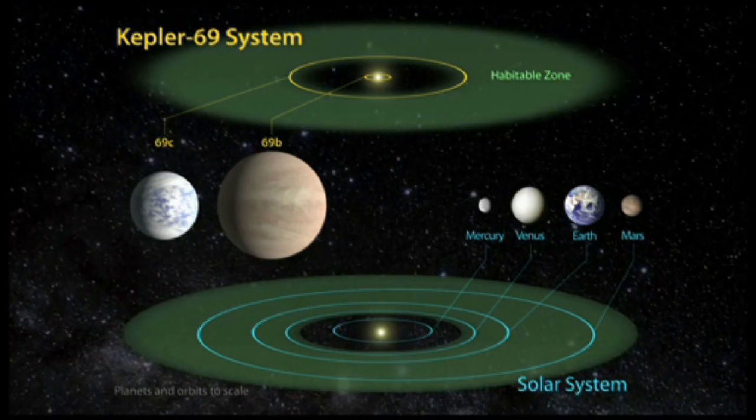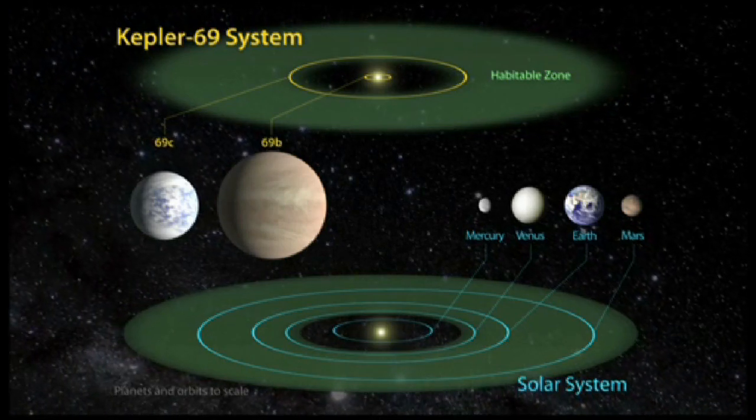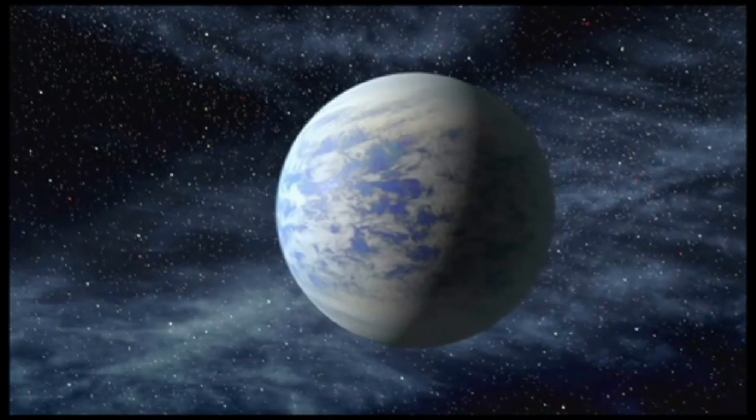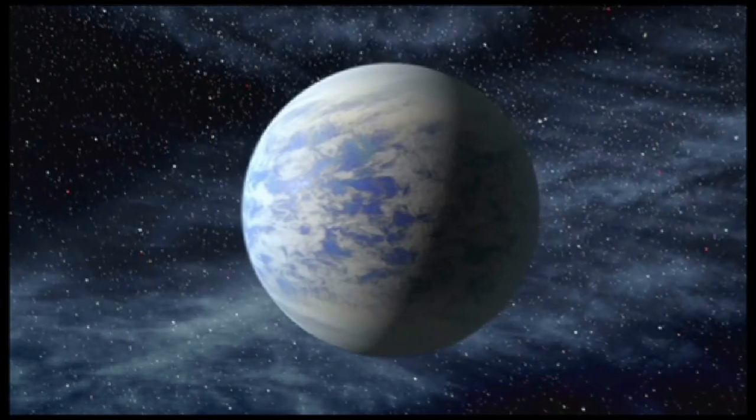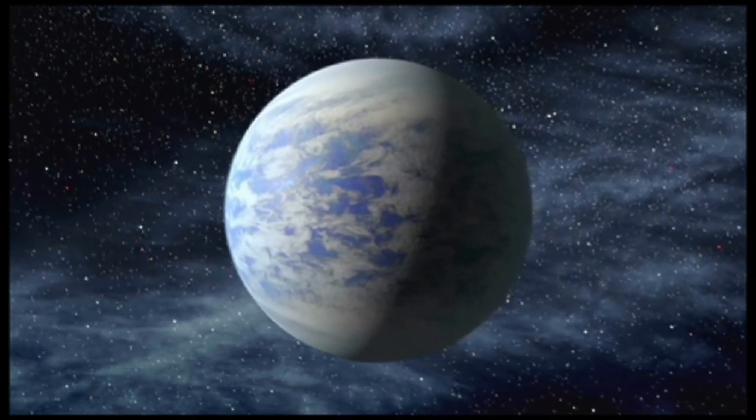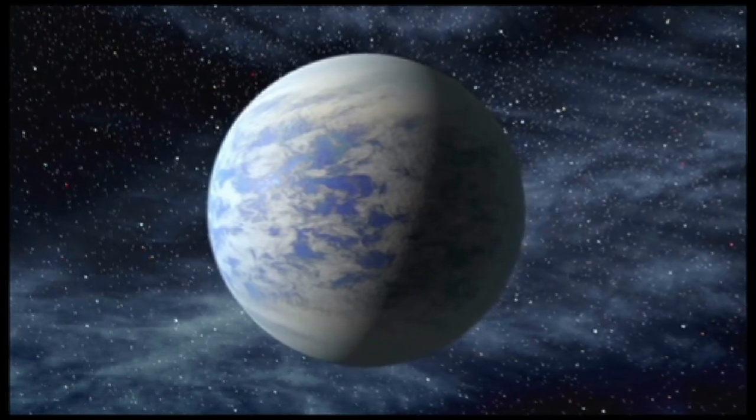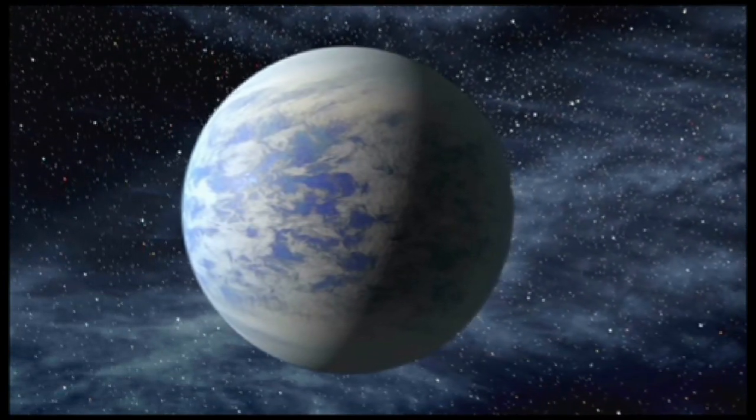It is much hotter and closer to its star than the planet Mercury is to the Sun. The outer planet, Kepler 69c, is about 70% larger than Earth and orbits every 242 days. It is the smallest planet found in the habitable zone of a Sun-like star.